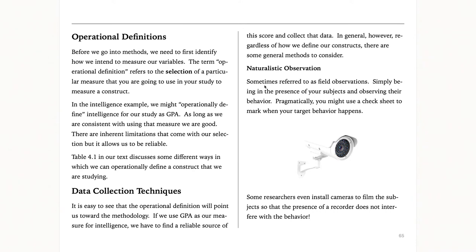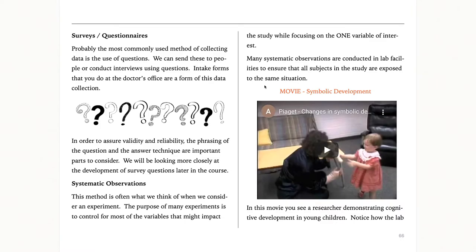Operational definitions look at our variables and determine how we're going to measure them. Then there are data collection techniques — these are your methods. We have naturalistic observation: watching human beings in their natural environment. The food court at the mall is a great place to do that. We also have surveys and questionnaires, and systematic observation — which is not just casual naturalistic observation, but using check sheets to look for certain specific kinds of behavior.